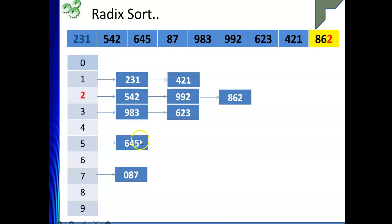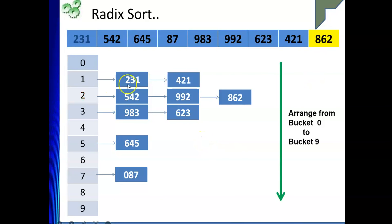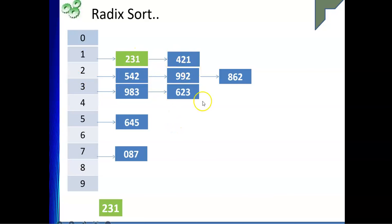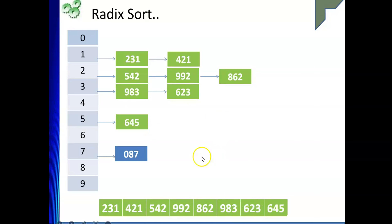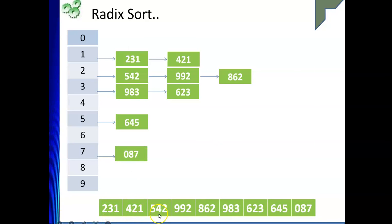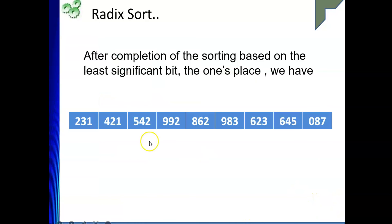After placing all numbers into buckets by least significant digit, we read them out from bucket 0 to bucket 9. The result is: 231, 421, 542, 992, 862, 983, 623, 645, and 087. This is our sorted arrangement after the first pass based on the least significant digit.